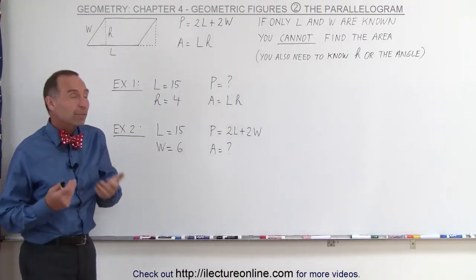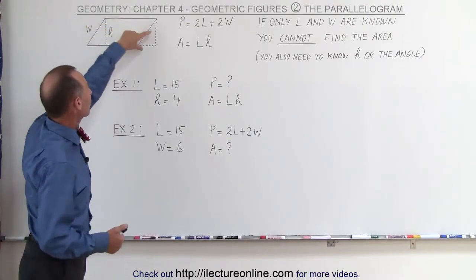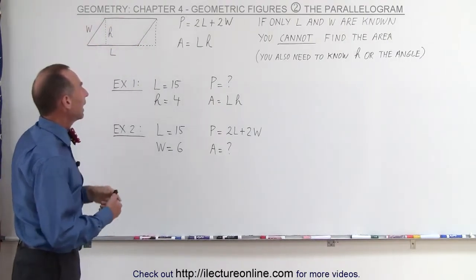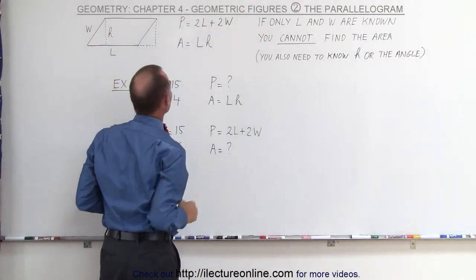To find the perimeter of a parallelogram, we have the long sides, let's call them L, and we have the shorter sides, let's call them W. The perimeter, just like for a rectangle, will be twice the long side plus twice the short side.